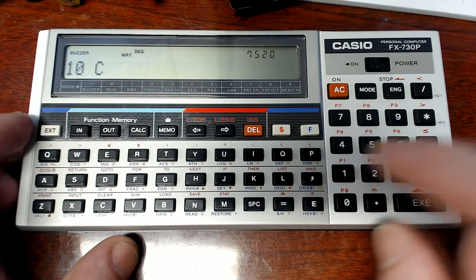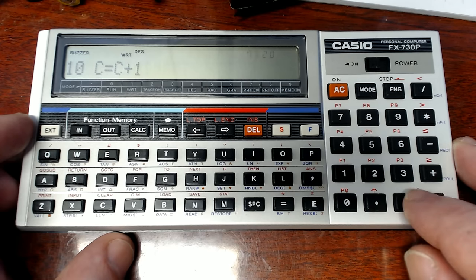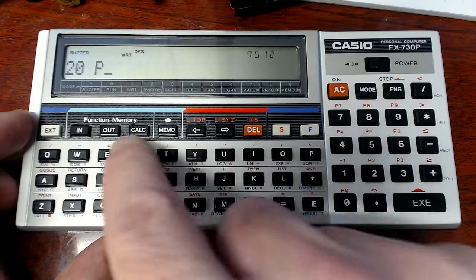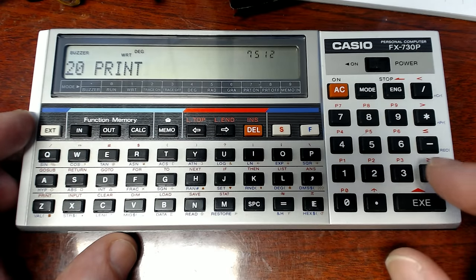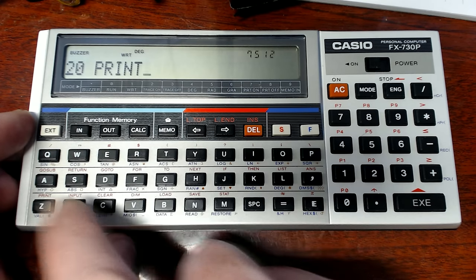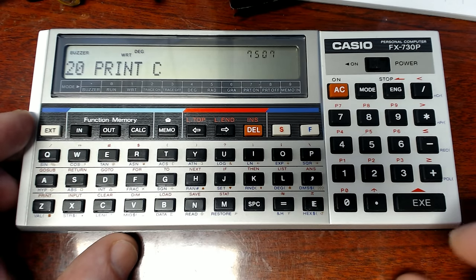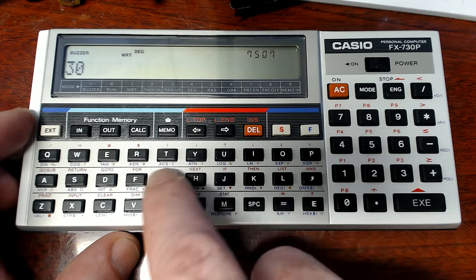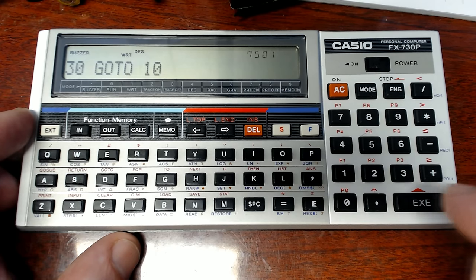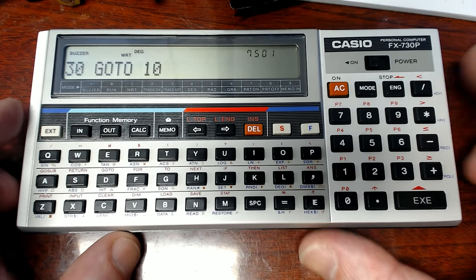And then we just go typing in our program. We can do 10 space C equals C plus one. Let's do something simple. And then we can go 20 space. I know I could probably don't have to type that in. There's probably a shift key for it somewhere. Print. There it is. Print C and 30 space go to 10. Hugely complicated program. And I love it how it updates how much memory you've got left. 30 go to 10. Terrific.